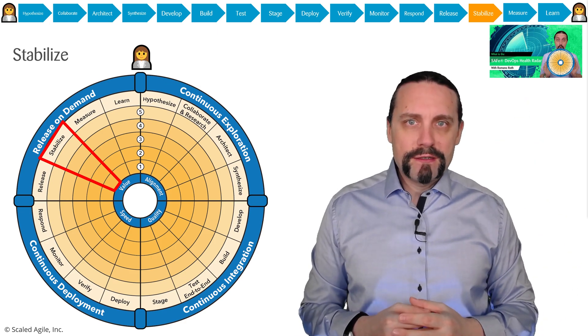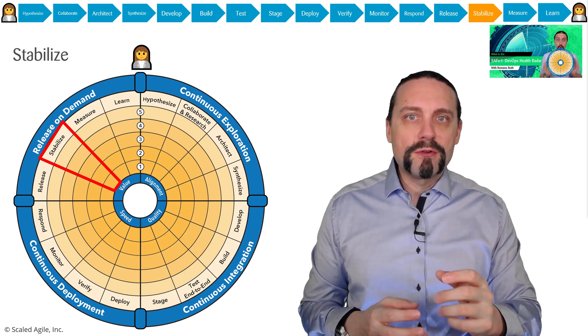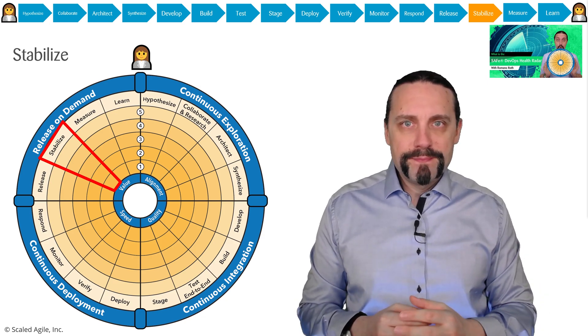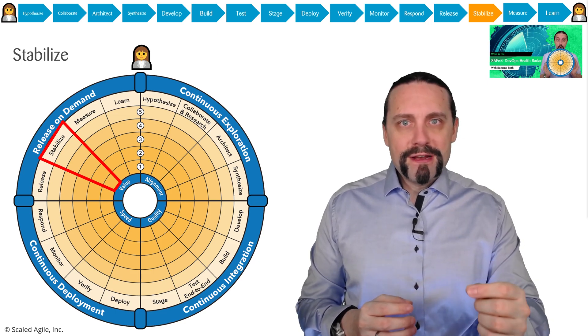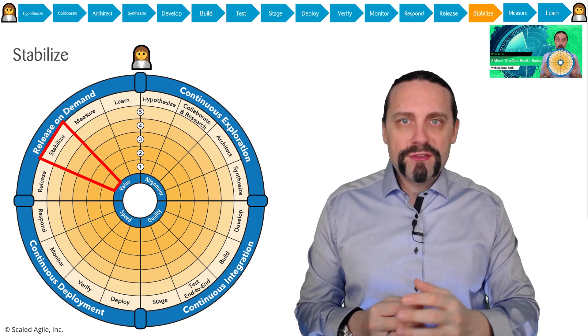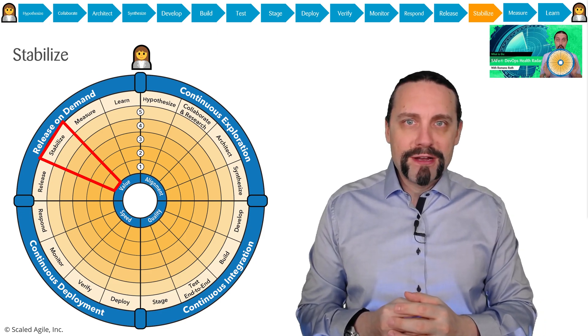The SAFe for DevOps health radar starts with the customer or business. They have bright ideas. From these bright ideas we identify the hypothesis behind this bright idea. Out of the hypothesis we create an epic.